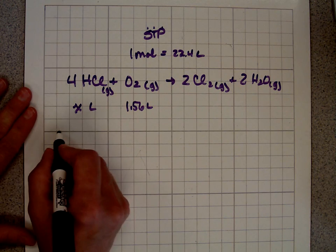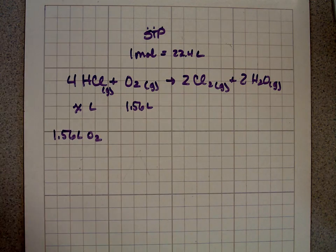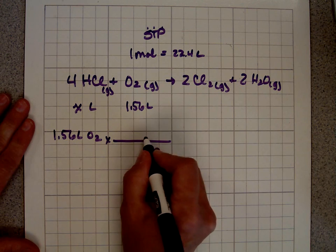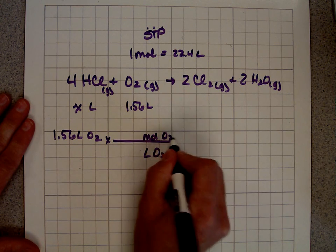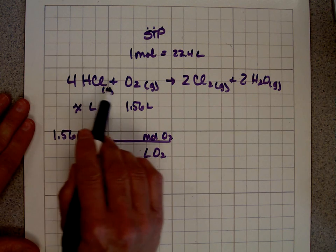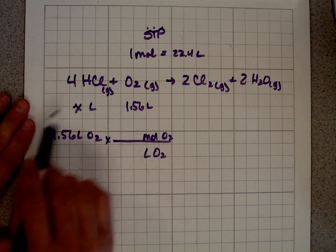As always, we start with what we know. We know that we have 1.56 liters of oxygen. We're going to get rid of liters of oxygen. We want to be left with moles of oxygen. The reason we're doing that is the only way I can get from oxygen to hydrochloric acid is through moles. If I don't change everything to moles, I can't move from one thing to the other.